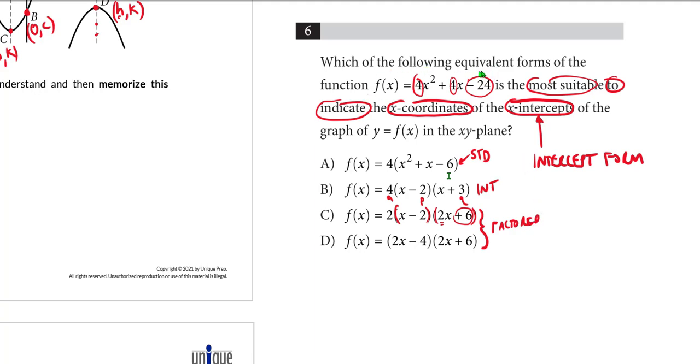Now keep in mind, the question itself did say these are all equivalent forms of this function. In other words, all of these, when we manipulate them, let's say foil them out or distribute them, we're going to get 4x squared plus 4x minus 24. So they all are the same function, but again, only answer choice B is most suitable for giving us the x-coordinates of the x-intercepts of the graph of f(x), which is obviously a parabola because this is a quadratic. We will know that the coordinates of the x-intercepts are going to be 2 and negative 3.